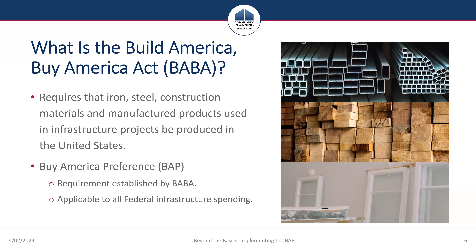BABA requires that all of the iron, steel, manufactured products, and construction materials used for federally funded infrastructure projects are produced in the United States, unless otherwise exempt or subject to an approved waiver. This requirement is known as the Buy America Preference, or the BAAP, and the specific requirements are codified at 2 CFR Part 184.